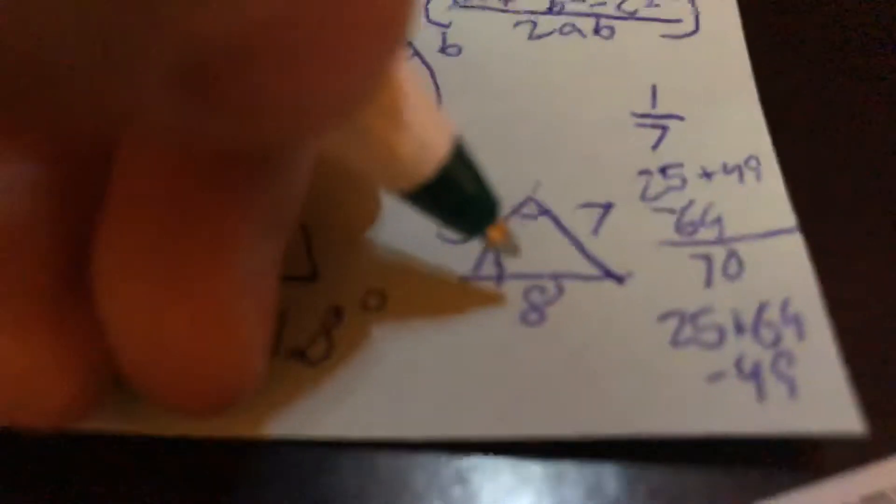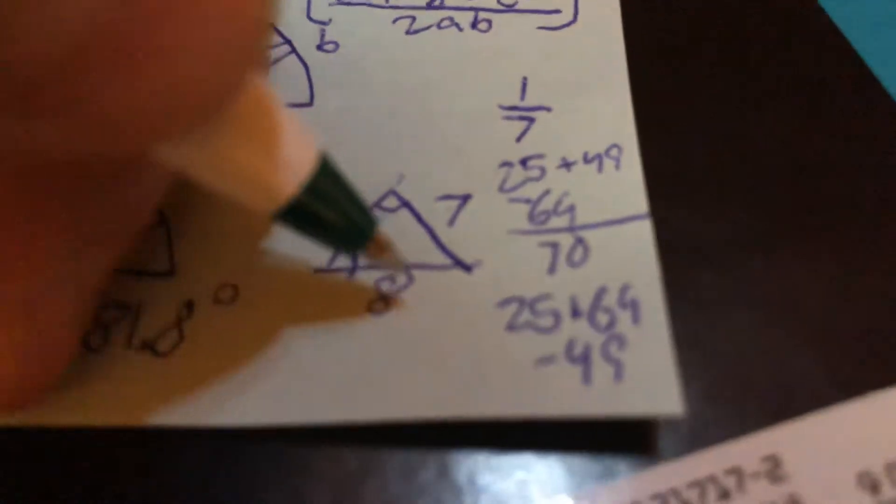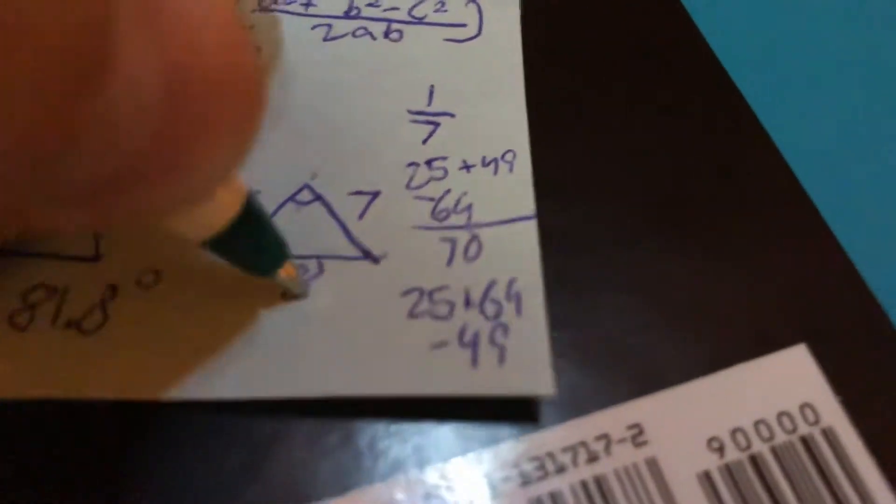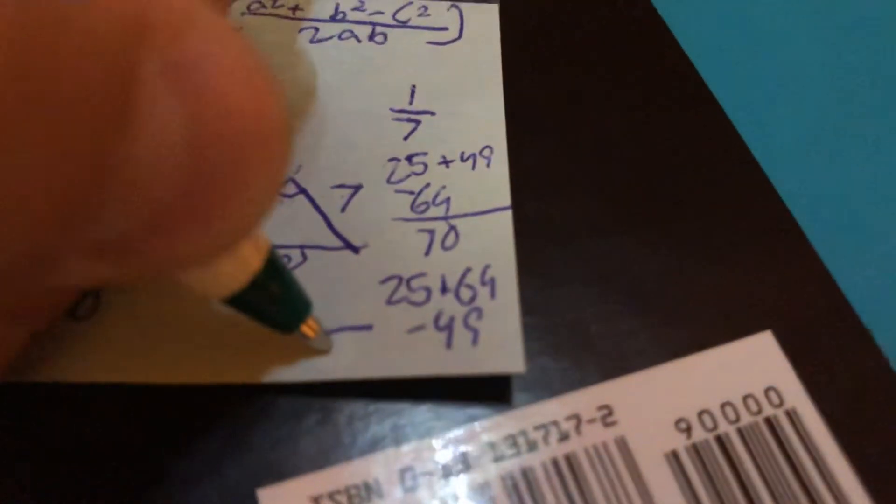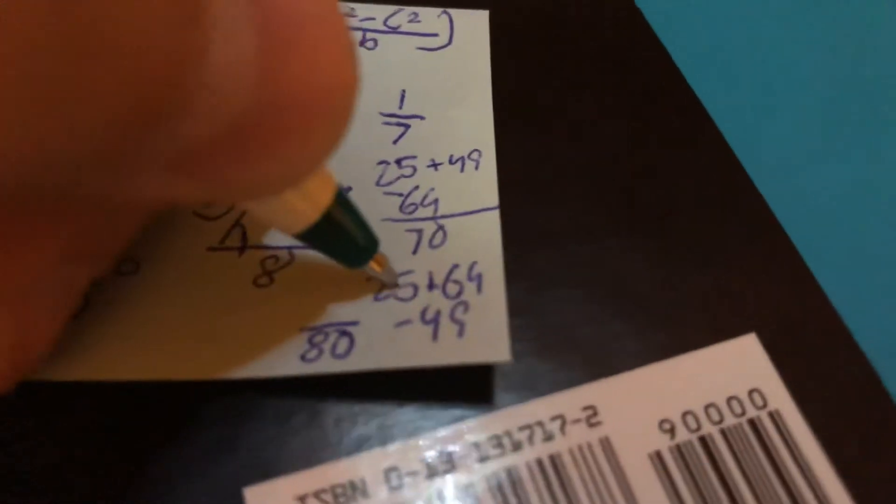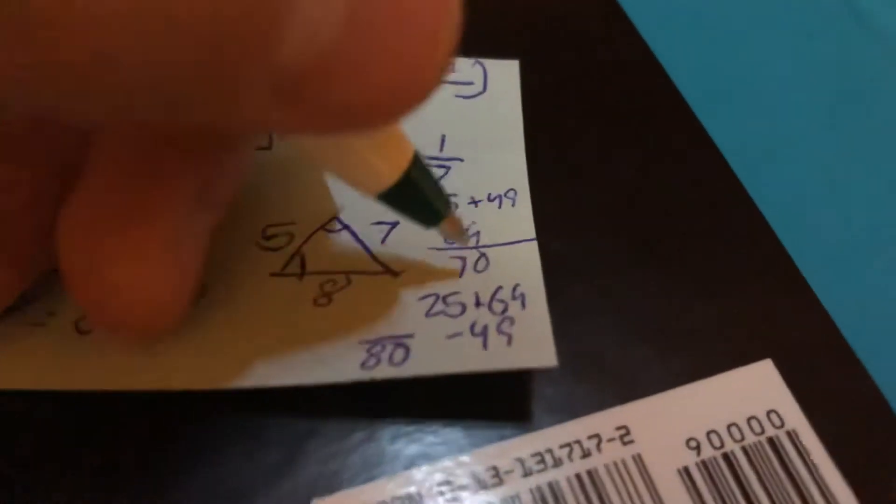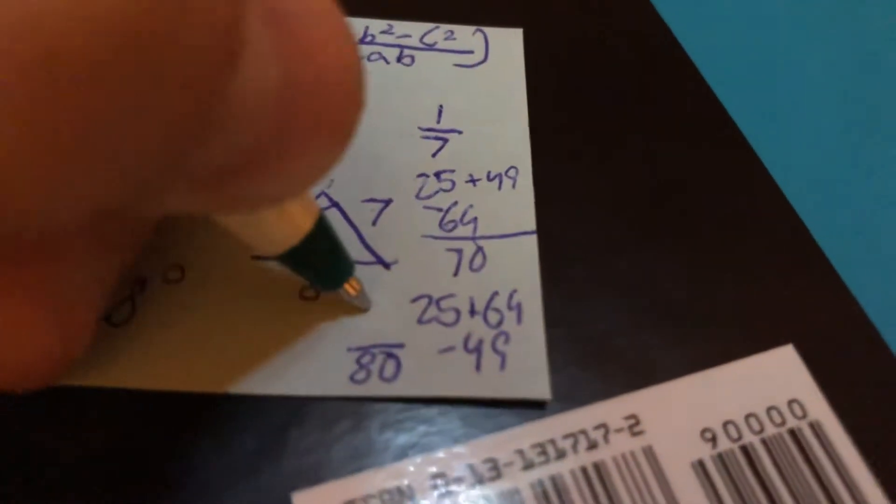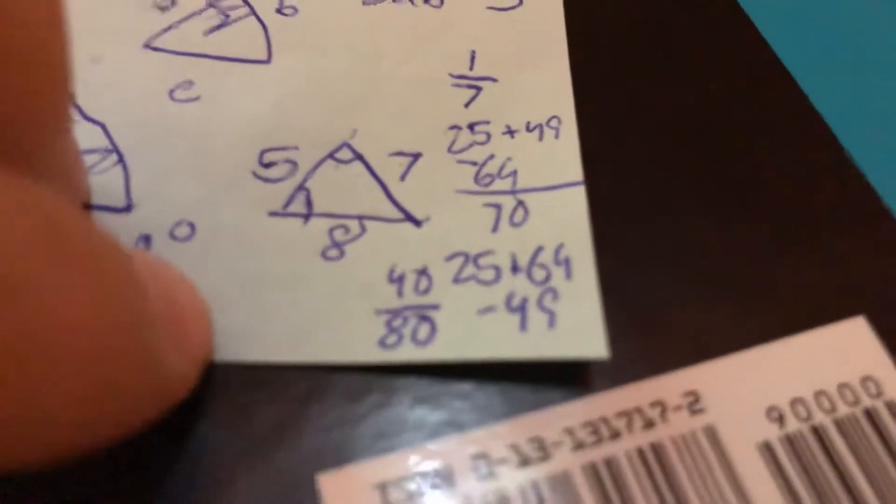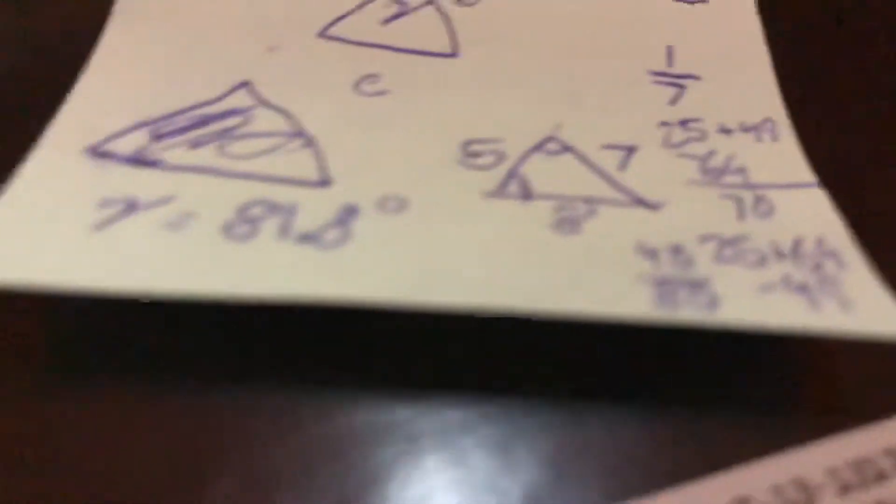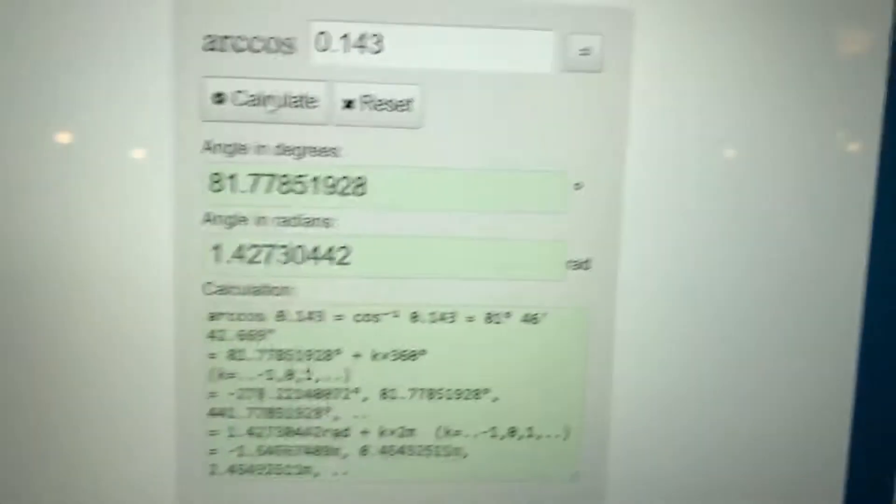Did I just say 47, folks? Oh, can you believe me sometimes? So we have this, and then we're going to divide it by 2ab. So ab is 40 times 2, which is going to be 80. 25 plus 64 is going to be 89, minus 49 is going to be 40 over 80, which is actually going to be one-half. Is that true? I'm always going to check my math. Yes, that is true actually.